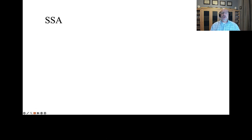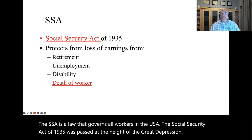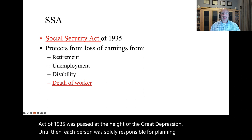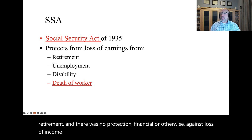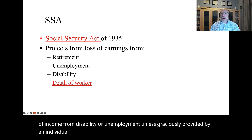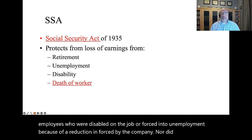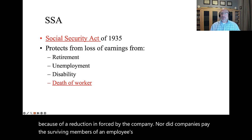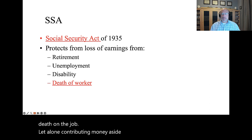The SSA is a law that governs all workers in the USA. The Social Security Act of 1935 was passed at the height of the Great Depression. Until then, each person was solely responsible for planning for their own retirement, and there was no protection, financial or otherwise, against loss of income from disability or unemployment unless graciously provided by an individual employer. Very few companies offered payment to employees who were disabled on the job or forced into unemployment because of a reduction in force.